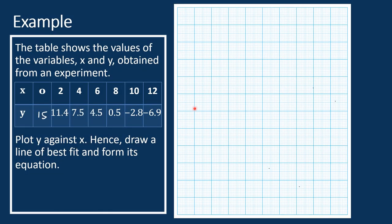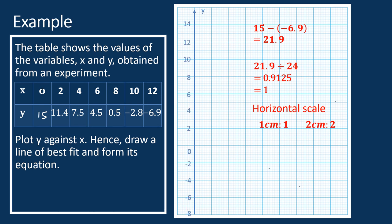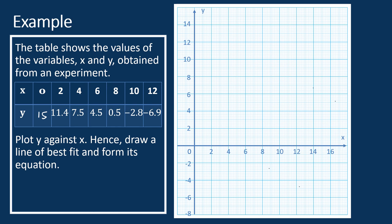Now we have the maximum and minimum values of y. Therefore, the range is 15 minus negative 6.9, which equals 21.9. There are 24 units for the vertical axis. Therefore, each unit equals 21.9 divided by 24, which equals approximately 0.9125, rounding to 1. Therefore, the vertical scale is 1 cm to 1 unit, or 2 cm to 2 units. The lowest value is negative 6.9, so we start from negative 8. Now we have the two axes drawn with suitable scales.